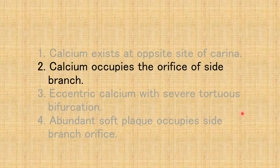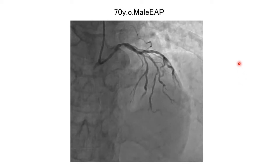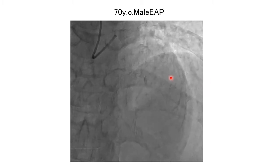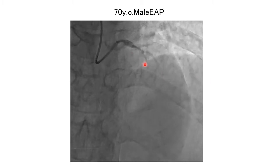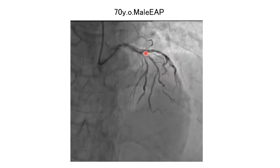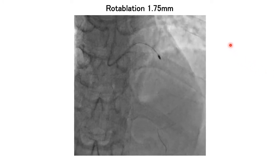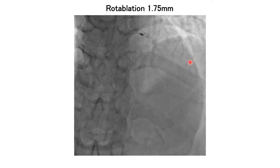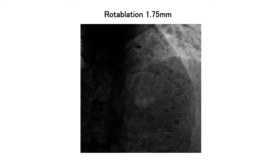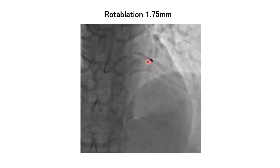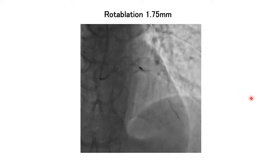The second case is calcium occupying the orifice of the side branch. The case is a 70-year-old male with effort angina. You can see the calcium on both sides of the LAD and diagonal orifice. Rotablation was performed with a 1.75 mm burr in the LAD.